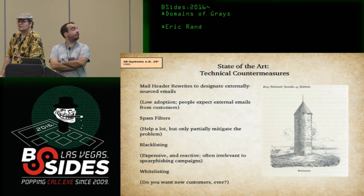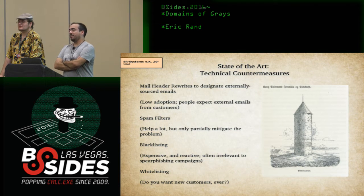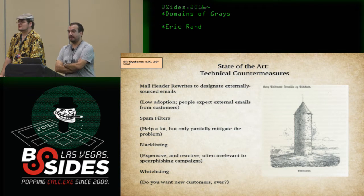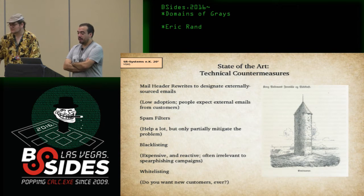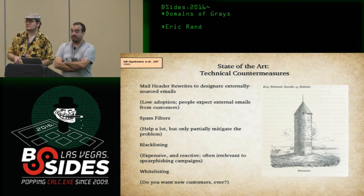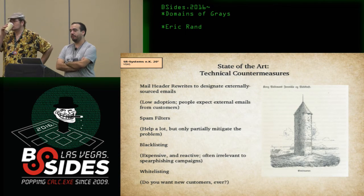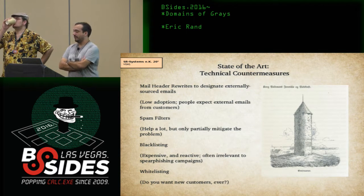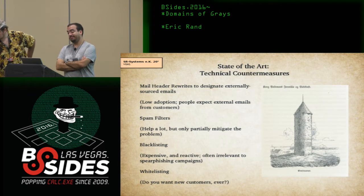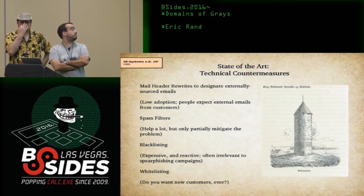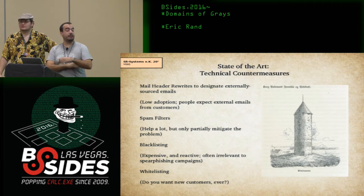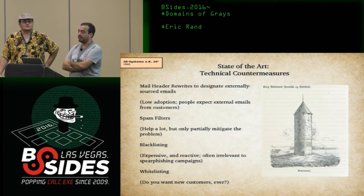We have spam filters, which partly mitigate it, but sometimes — especially in SMB — if you're actually running your own spam filter, it is not the best of situations. You're still going to get these coming through. We have blacklisting, which for the most part is unaffordable for small businesses. It's not the easiest thing to get running. It takes a while. And if you don't already know what's coming, blacklisting doesn't help.